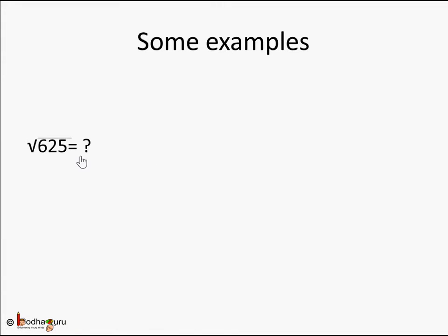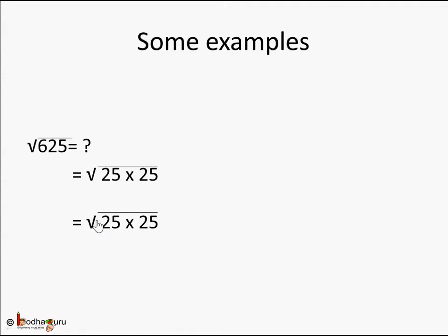Let's take another example: square root of 625. We know 625 is nothing but 25 into 25. So we can write square root of 625 as square root of 25 into 25, which is nothing but 25. So square root of 625 is 25, or vice versa, 25 squared is equal to 625.